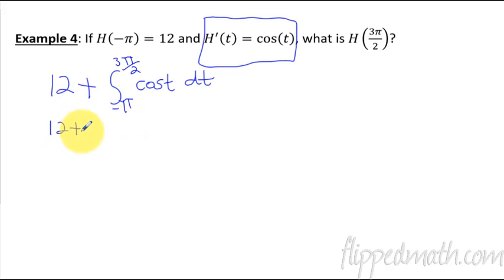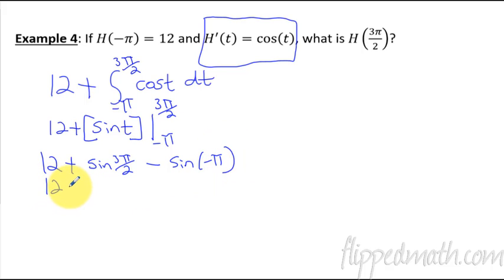Okay, what is that going to be? Twelve plus. The integral of cosine of t is just a sine and it is positive because the derivative of sine is cosine, so that works. And then we're going to go from, and we're only concentrating on this portion of it when we plug in these values from negative pi to three pi over two. Alright, so now we go twelve plus, plug in sine three pi over two, minus sine, plug in a negative pi. So this is twelve plus, sine of three pi over two, that is negative one, minus sine of negative pi, that is a zero. So it's twelve minus one, eleven. H of three pi over two equals eleven.